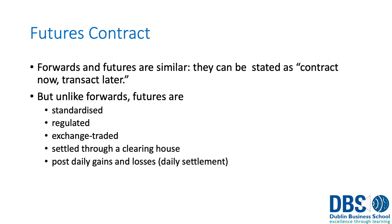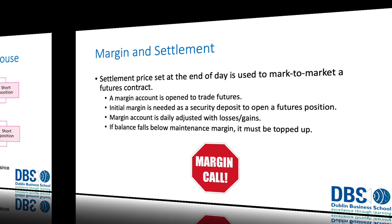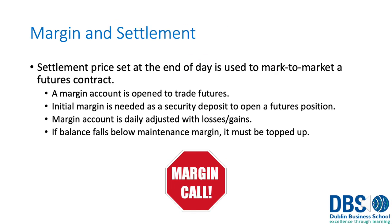Forwards and futures are very similar, the main difference being that it's a contract-now, transact-later type of arrangement. Unlike forwards, futures are standardized, regulated, exchange-traded, settled through a clearinghouse, and post daily gains and losses. Futures are traded through clearinghouses, so each side of the position — whether long or short — works via a clearinghouse rather than engaging directly with the counterparty on the other side.